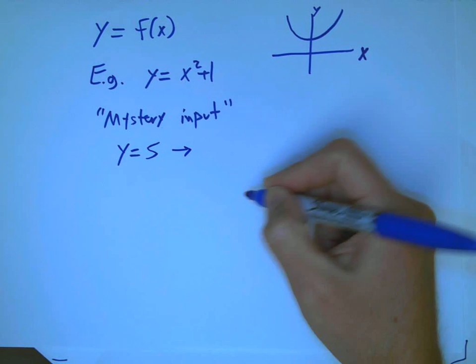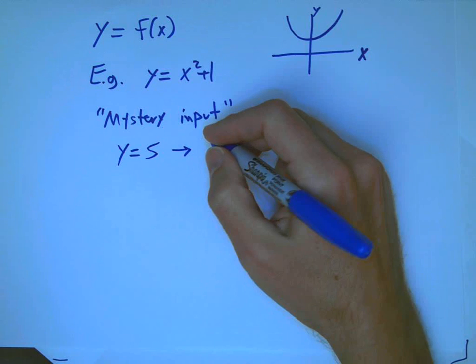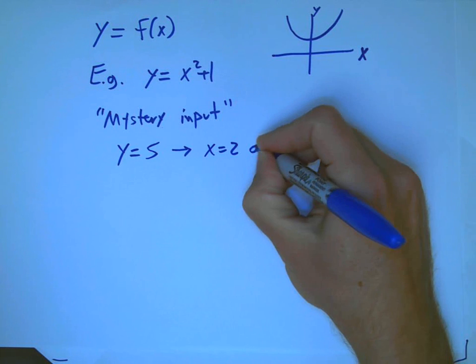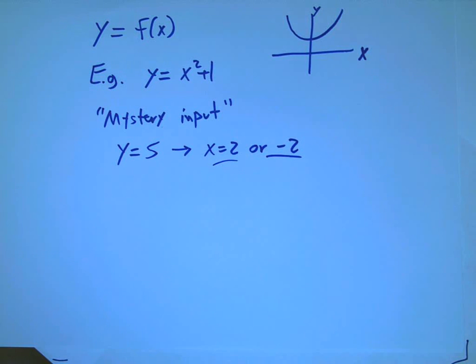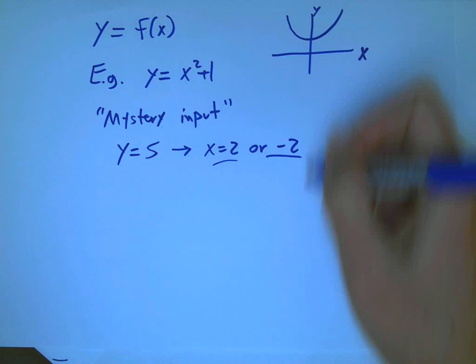then it's not too hard to figure out that x could be 2. Or wait a minute, it could be minus 2. You can't tell what I'm thinking there. We can't actually get the mystery input. We can't undo this function.